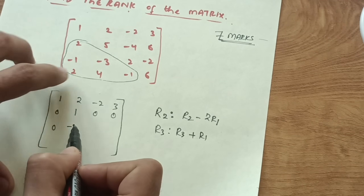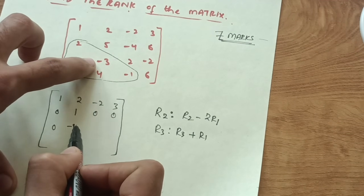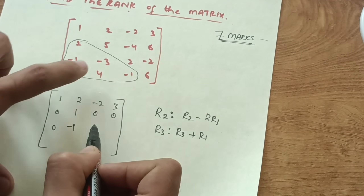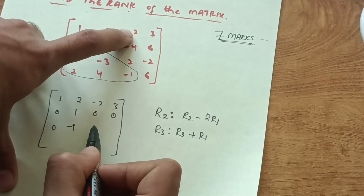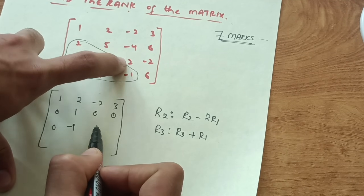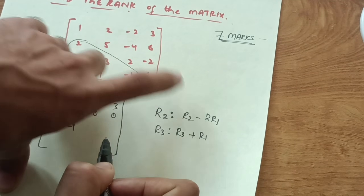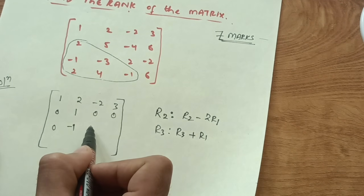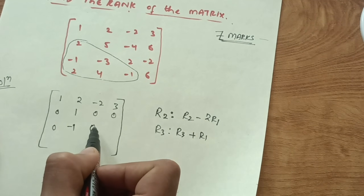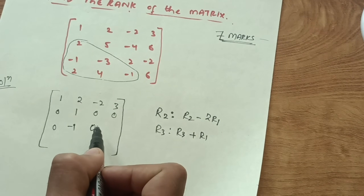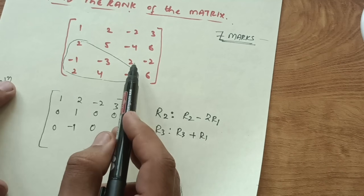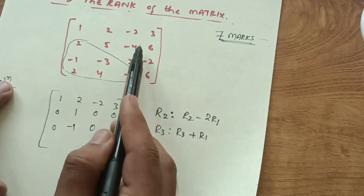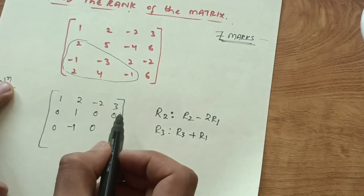Continuing R3 + R1: 2 + (-2) = 0, and then -2 + 3 = 1. So row 3 becomes [0, -1, 0, 1] after this transformation.